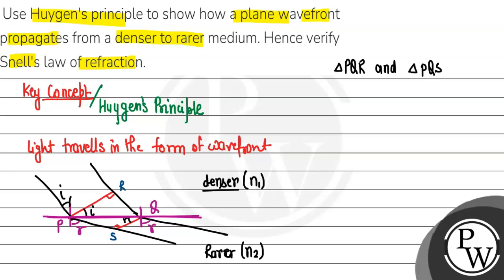We can find sin i from triangle PQR, where RQ is the perpendicular and PQ is the hypotenuse. And sin r from triangle PQS, where PS is the perpendicular and PQ is the hypotenuse. So sin i upon sin r equals RQ upon PS.